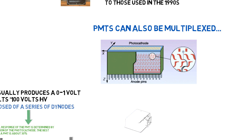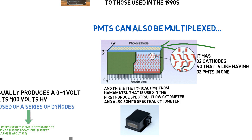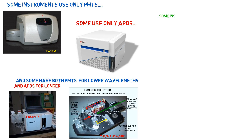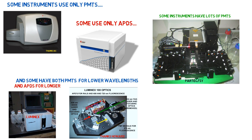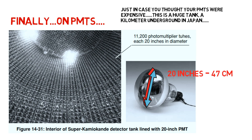PMTs can also be multiplexed. A typical PMT from Hamamatsu was used in the first Purdue spectral flow cytometer and also in Sony's spectral flow cytometer — it has 32 cathodes, like having 32 PMTs in one. Some instruments only use PMTs, some only use APDs, and some have both PMTs for lower wavelengths and APDs for longer wavelengths. Some instruments have a lot of PMTs. And some PMTs are huge — about 20 inches in diameter — with 11,200 of them lining the Super Kamiokande detector in Japan.